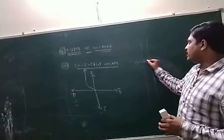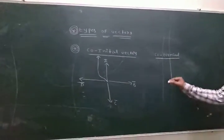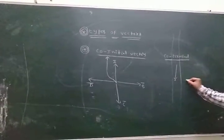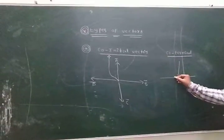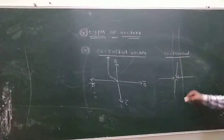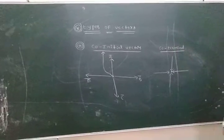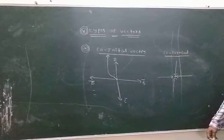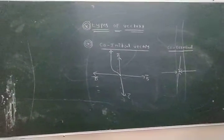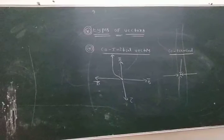Co-terminal vectors: all the vectors' ending point is the same. The arrowhead indicates the ending point and the tail indicates the initial point. All vectors whose ending point is the same are called co-terminal vectors. Co-terminal vectors means all the vectors have the same final point.